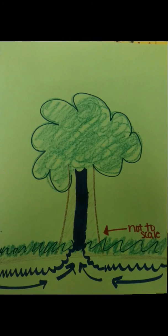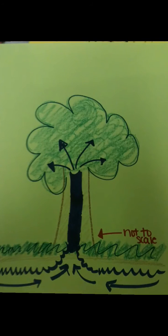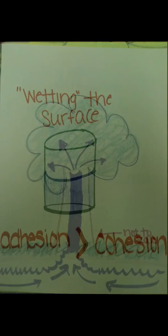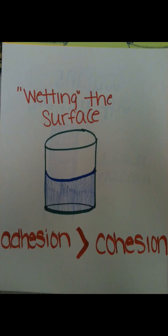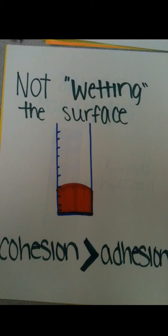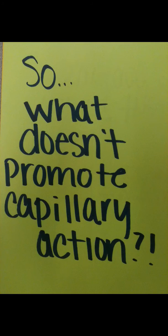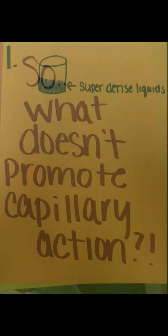The surface tension in the water causes the water to climb up as the meniscus forms. When a meniscus is concave, the fluid is said to be wetting the substance it is drawn to, creating capillary action. When the meniscus is convex, the liquid is not wetting the surface because the liquid's cohesion is stronger than the adhesive forces, which also promote capillarity.